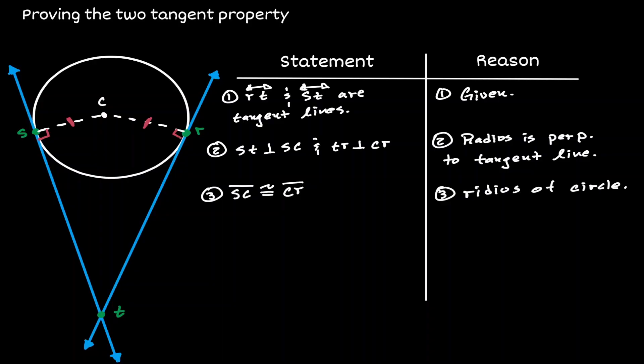But what if we consider a line that connects the center of the circle to point T? Then we have created two triangles: the triangle on the left and the triangle to the right. Both triangles share the same side CT. So let's say that CT is congruent to each other by the reflexive property.